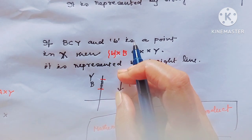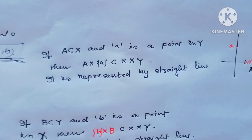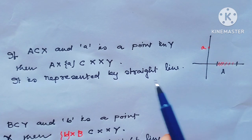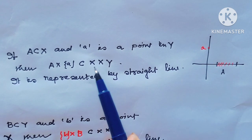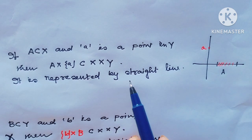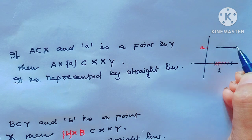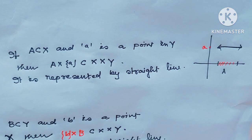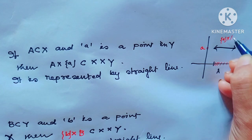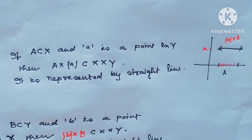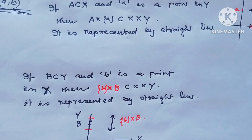So this is only a straight line. I hope all viewers have understood. Also, if A is a subset of X and small a is a point in Y, then A cross small a is contained in X cross Y, and it is represented by this type of straight line. This is small a cross A.